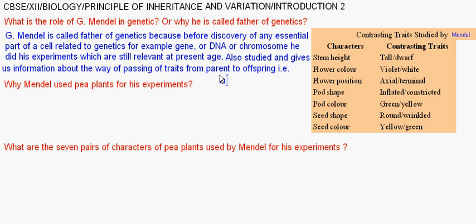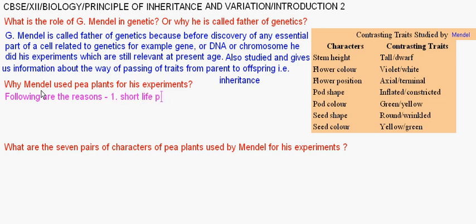Why did Mendel use pea plants for his experiments? Following are the reasons. Number 1: short lifespan of pea plants. Number 2: easily available, so experiments can be conducted. Number 3: they can be grown in a garden, so they can be easily cultivated.